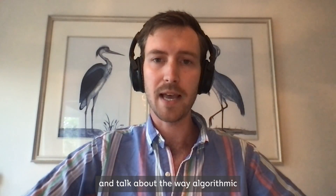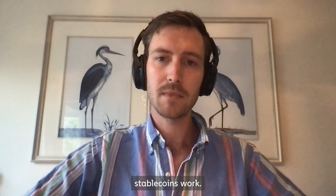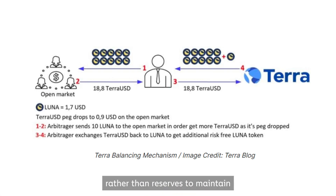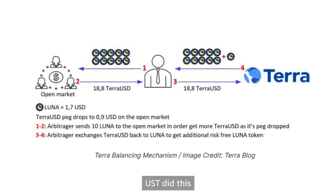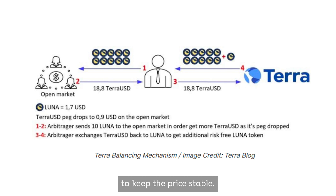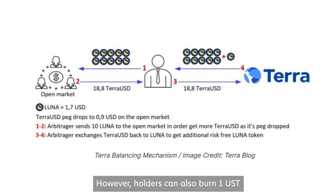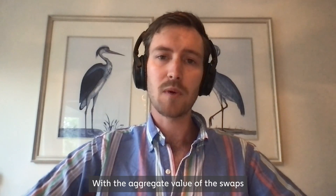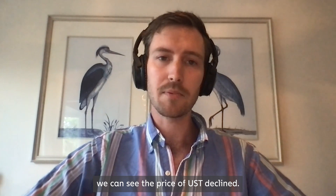Let's take a quick sidebar and talk about the way algorithmic stablecoins work. An algorithmic stablecoin uses algorithms rather than reserves to maintain stable values over time. UST did this through a sister token called LUNA, where a redemption mechanism between the two assets would set off arbitragers to keep the price stable. Holders can always mint UST by burning an equal amount of LUNA. However, holders can also burn one UST for $1 worth of LUNA, even if one UST is worth less than $1. With the aggregate value of the swaps previously mentioned, we can see the price of UST declined.